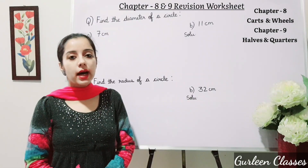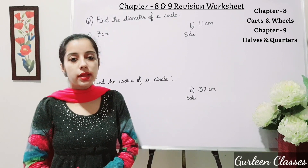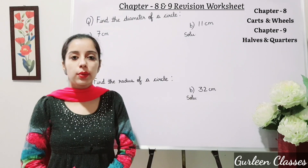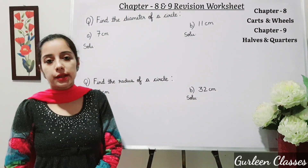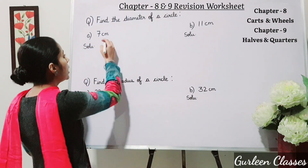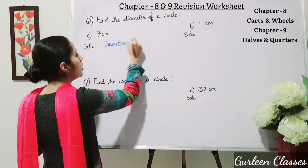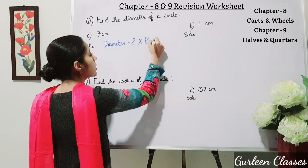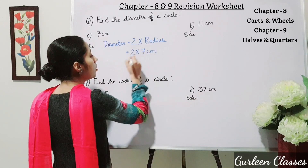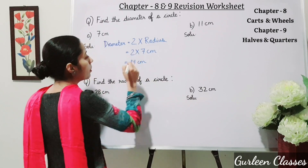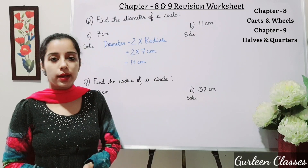Next question: find the diameter of a circle. To find the diameter when radius is given, the formula is: diameter equals 2 into radius. Here radius is given as 7 centimeters. So 2 × 7 = 14. Therefore the diameter is 14 centimeters. Students, part B will be your homework — do it in the same way.